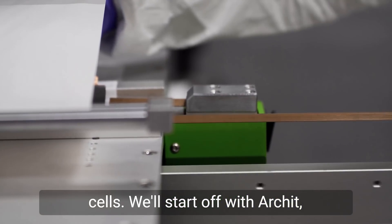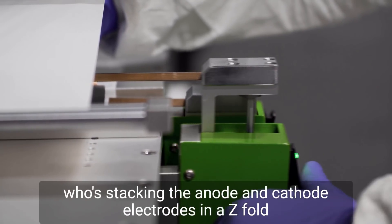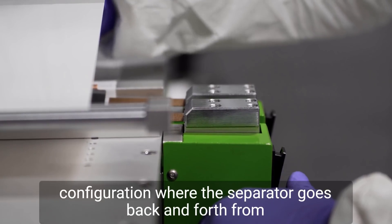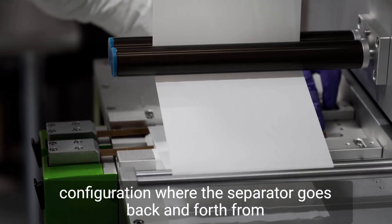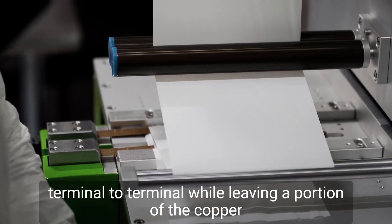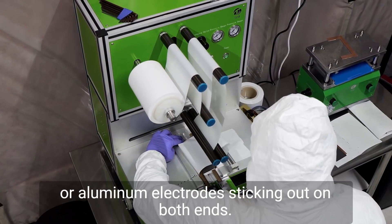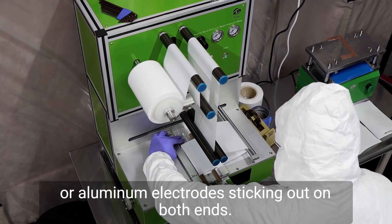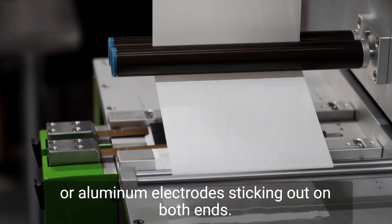We'll start off with Archit, who's stacking the anode and cathode electrodes in a Z-fold configuration, where the separator goes back and forth from terminal to terminal, while leaving a portion of the copper or aluminum electrode sticking out on both ends.